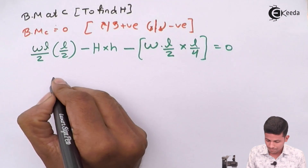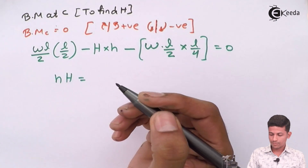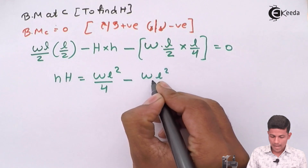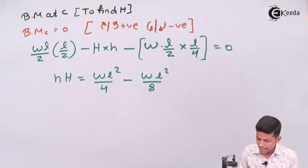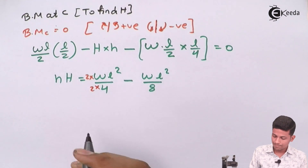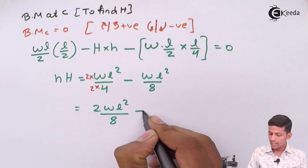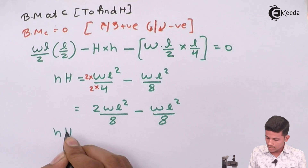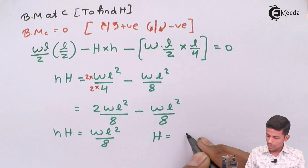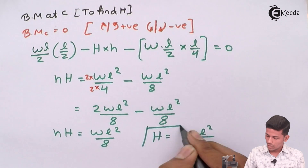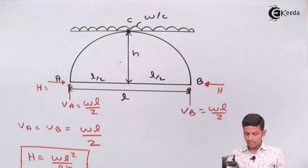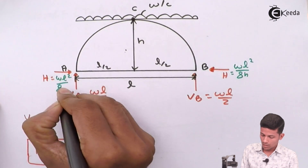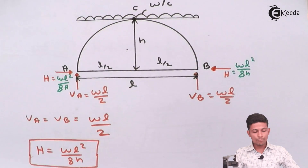Taking H·h outside the bracket and simplifying: H·h equals WL²/4 minus WL²/8. With a common denominator of 8, this becomes 2WL²/8 minus WL²/8, giving H·h equals WL²/8. Therefore H equals WL²/(8h). This is the derived formula for horizontal thrust.